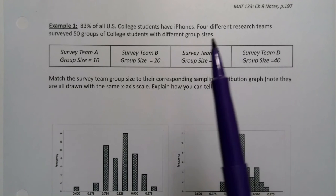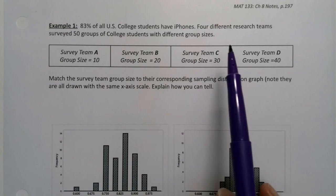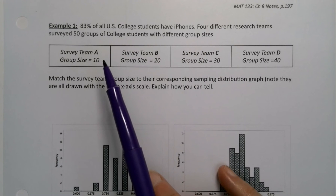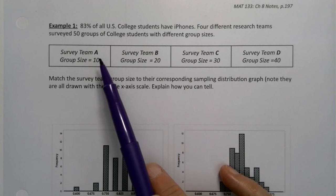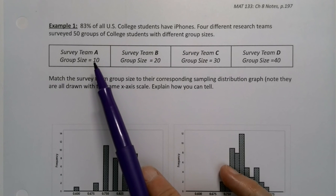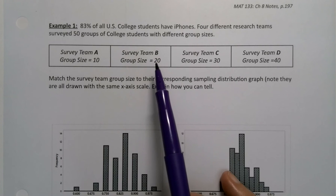Did you catch that? We have four different teams, and they would go out and survey 50 groups. So Team A would get 50 groups that are size 10. Team B got 50 groups that were size 20. So they go out and pull 50 groups of size 20 college students.